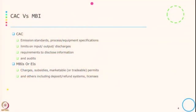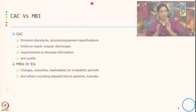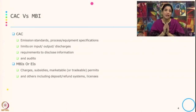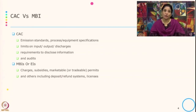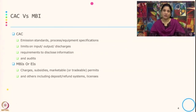Let us see the difference between the command and control approach and market based instrument. Command and control approach is abbreviated as CAC and market based instrument as MBI. CAC includes emission standards, process and equipment specification, limits on input, output and discharge, and requirement to disclose information and audit. MBI includes emission charges, subsidies, tradable or marketable permits, deposit refund systems, and licenses.